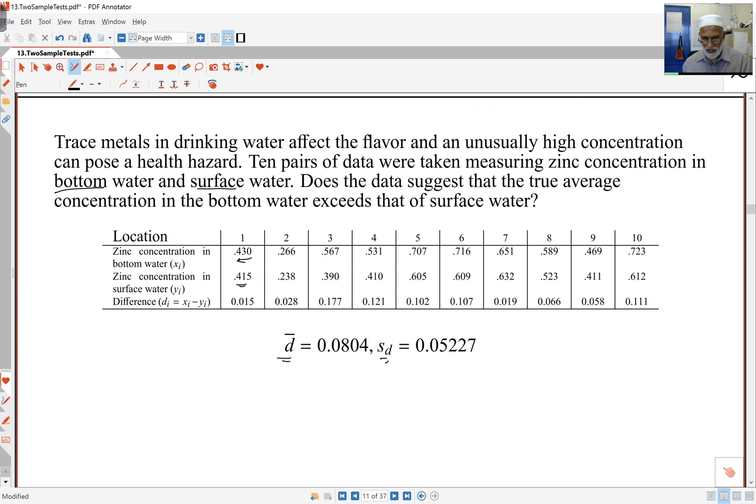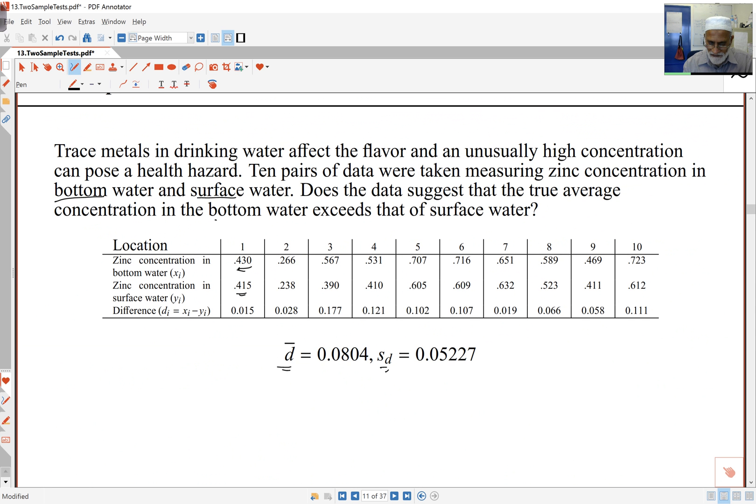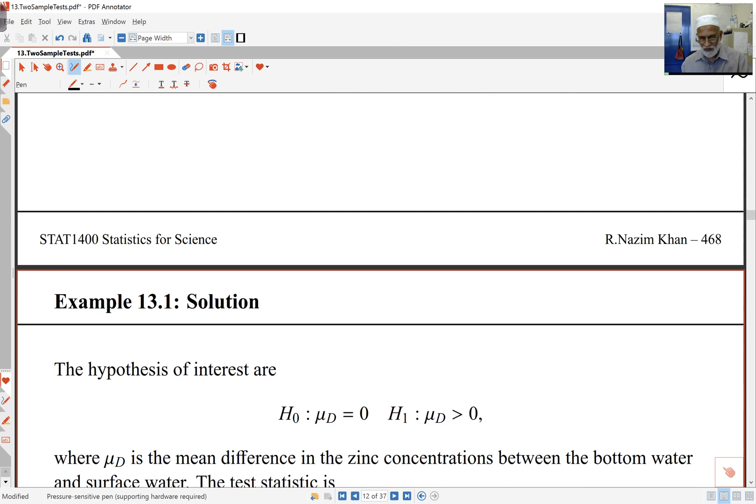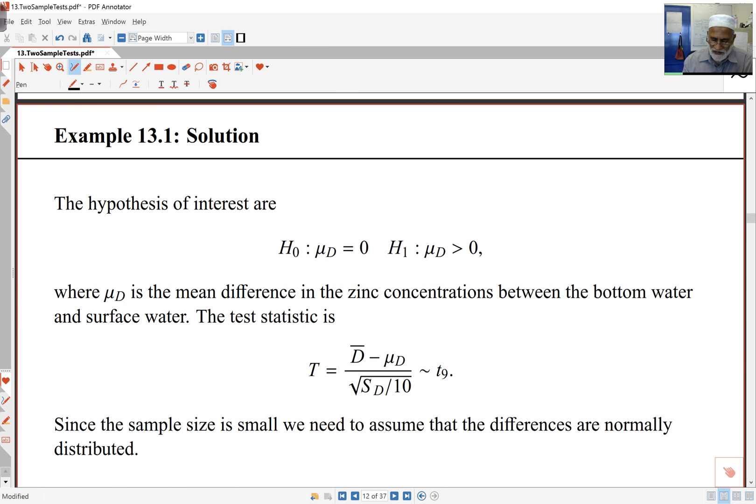So my hypothesis here, if you look at it, what I'm saying is, does the concentration in the bottom water exceed that of the surface? What I've done over here is, I've had the bottom minus the top, right? So my difference is the bottom minus the top. If the bottom exceeds the top, that means the difference will be positive. So my mu_d here is 0 versus bigger than 0.